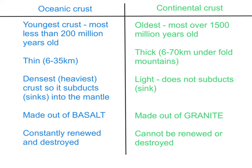Oceanic crust is the youngest, being less than 200 million years old. The oldest crust is continental crust, and most of this is over 1,500 million years old.